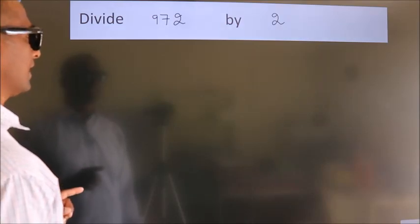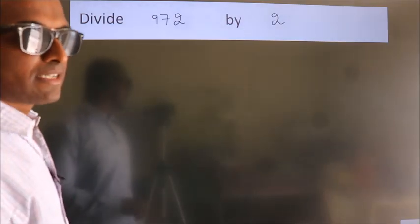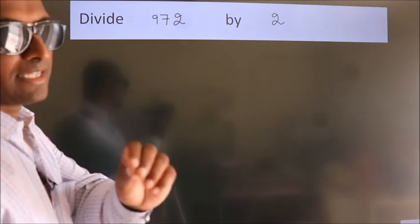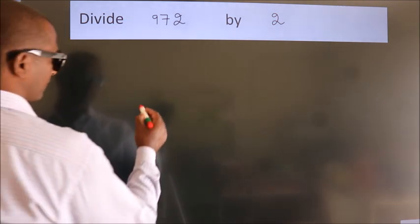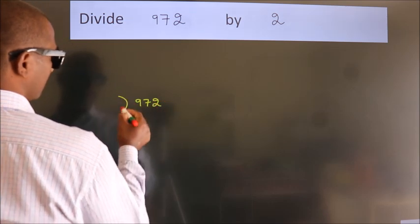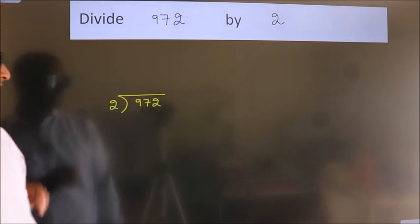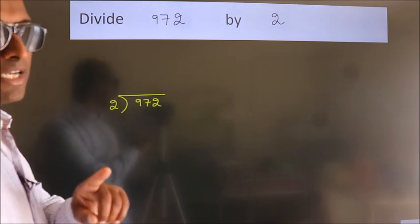Divide 972 by 2. To do this division, we should frame it in this way. 972 here, 2 here. This is your step 1.